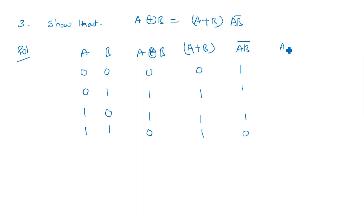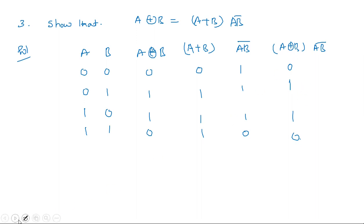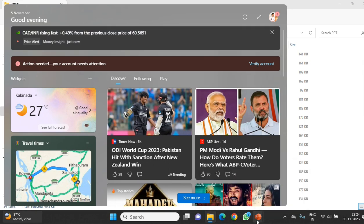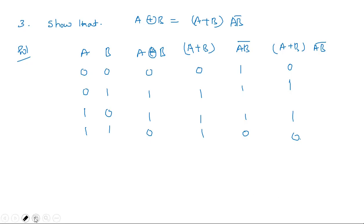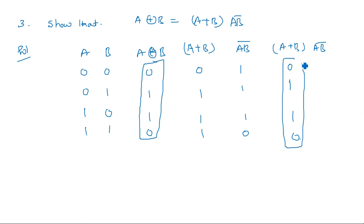Now multiply A XOR B by (A+B)·(AB̄). Check: wherever both have ones, output is one, remaining cases output is zero. The result is 0,1,1,0. Comparing with A XOR B (0,1,1,0) — they are equal. So A XOR B = (A+B)·(AB̄) is verified. We also need to draw the circuit diagram for these expressions.